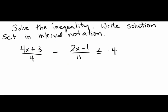The inequality we're solving is (4x + 3)/4 minus (2x − 1)/11 is less than or equal to negative 4. This is a linear inequality, meaning the x's are not in the denominators and don't have any exponents or roots over them. If we had any of those, we might need to approach the inequality differently, but since we don't, we're going to solve it the same way we would solve an equation that has denominators.